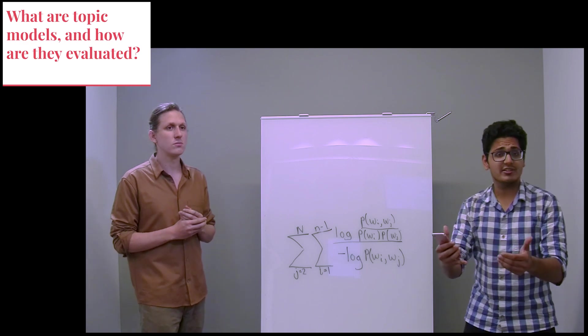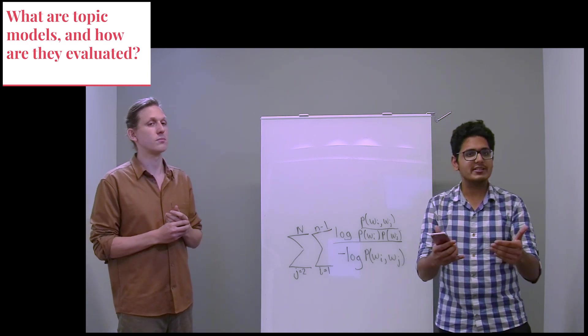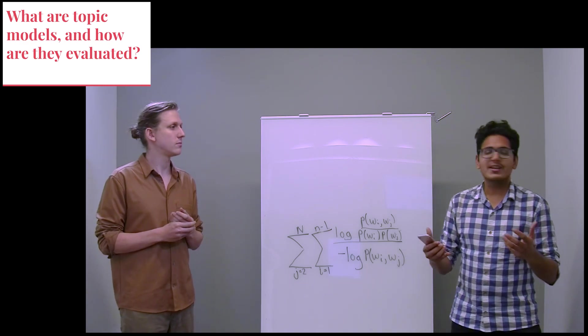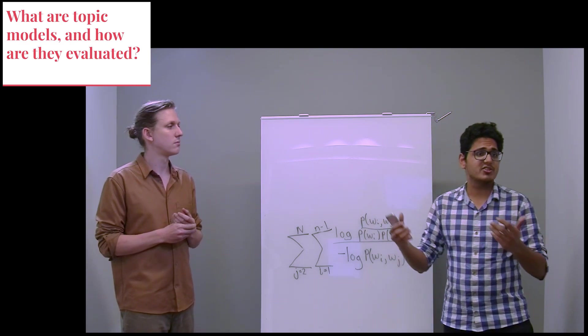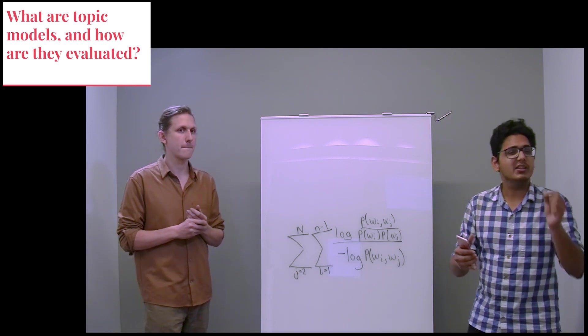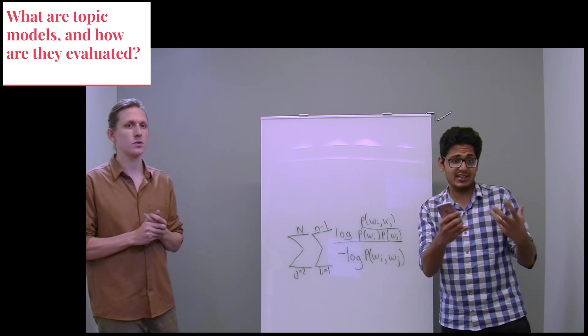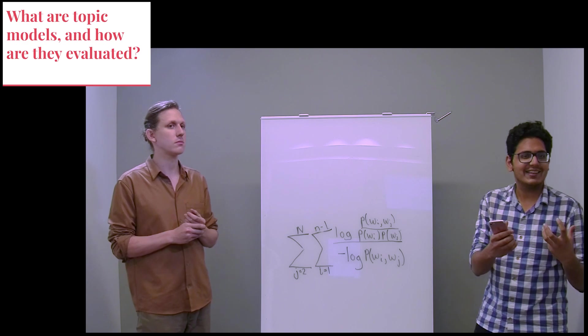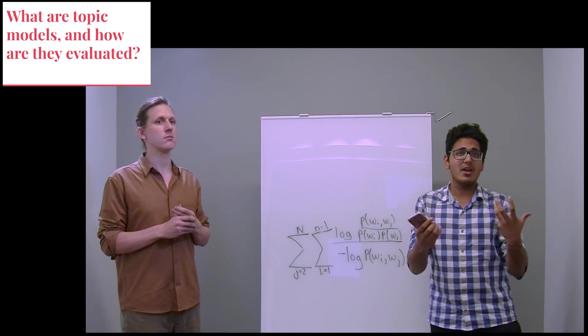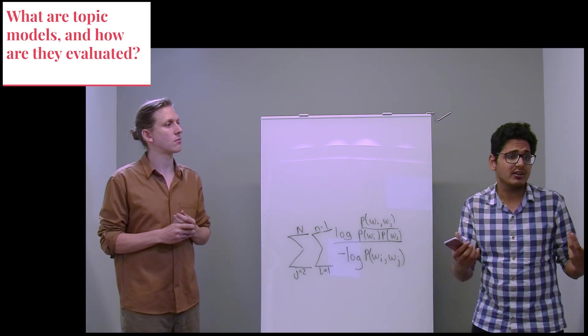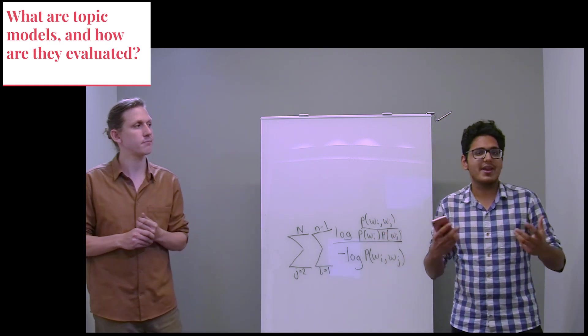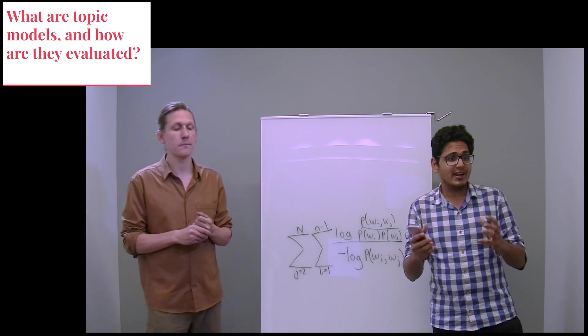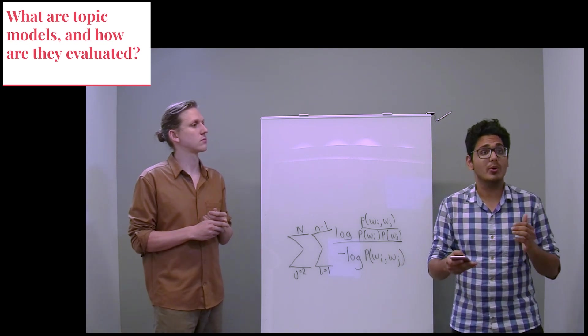And when practitioners actually use topic models, what they are trying to do is get an idea of the structure of the document collection. Again, topics are distributions over words. And the most probable words in a topic should be semantically related to one another. So if you have a topic about art, the most probable words might be painting, sculpture, museum, exhibition. In general, that is, they should be coherent.